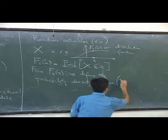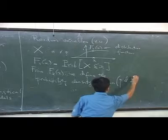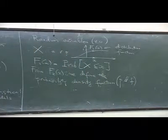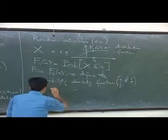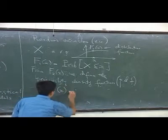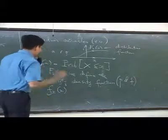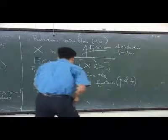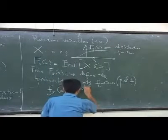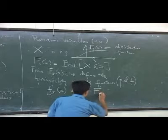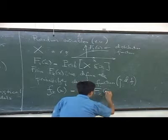So according to definition, I can define the probability density function as f_x(x), and f_x(x) is equal to the derivative of the capital F of x, the capital F(x).